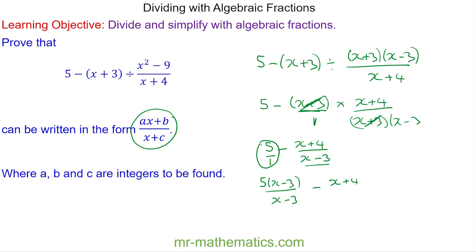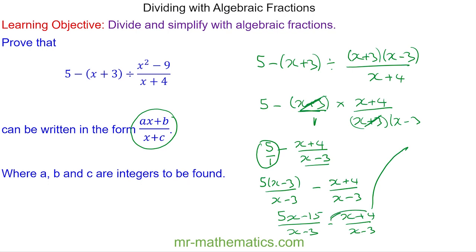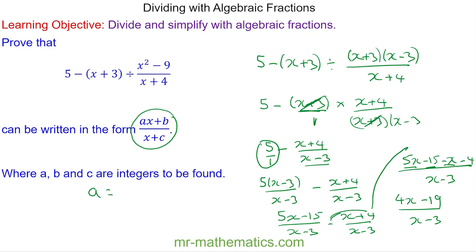We need a common denominator, so we multiply 5 by x minus 3 over x minus 3, giving 5x minus 15 over x minus 3, minus x plus 4 over the same denominator. Expanding with the negative sign gives 5x minus 15 minus x minus 4, all over x minus 3. So 5x minus x is 4x, and negative 15 minus 4 is negative 19, giving 4x minus 19 over x minus 3. Therefore a is 4, b is negative 19, and c is negative 3.